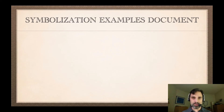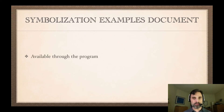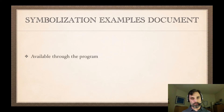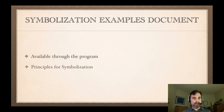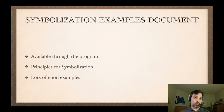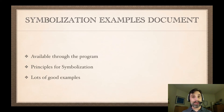I want to tell you about the Symbolization Examples document. It's available through the program — if you go into the Symbolization module, there's a button at the bottom that says 'Examples,' and if you push it, it will open up the Symbolization Examples document. It's also online on our course website, and I've posted it below this video. It spells out principles for symbolization and provides lots of worked examples. It's a really useful resource beyond what the textbook has, so I'd like you to read it in addition to the text sections on symbolization.